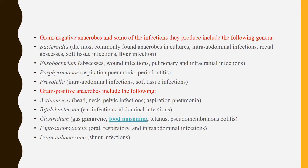Gram-negative anaerobes and the infections they produce include the following genera. Bacteroides is most commonly found in anaerobic cultures, causing intra-abdominal infection, rectal abscesses, soft tissue infection, and liver infection. Fusobacterium is found in wound infection, pulmonary infection, and intra-cranial infection. Porphyromonas is found in aspiration pneumonia and periodontitis.